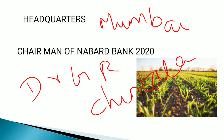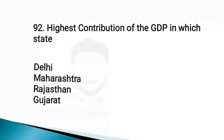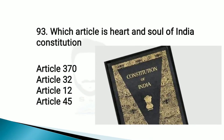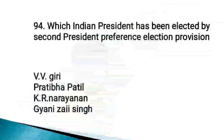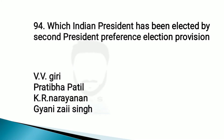Let's move on to the next question. Highest contribution to GDP is from which state? Rajasthan. Which article is the heart and soul of the Indian constitution? Article 32. Which Indian president was elected by the second preference provision of election? V.V. Giri.